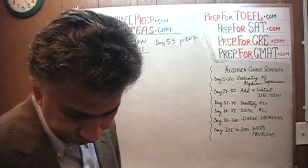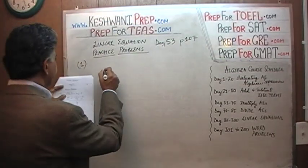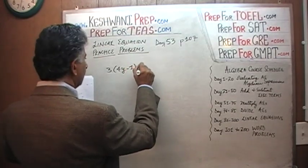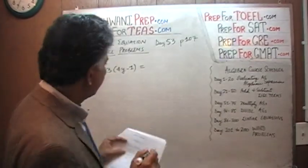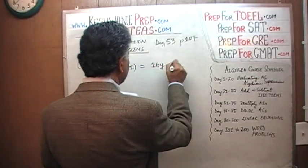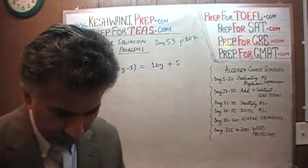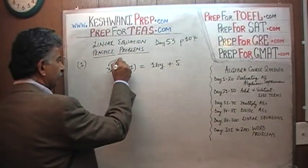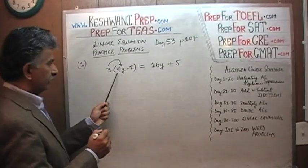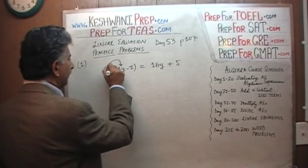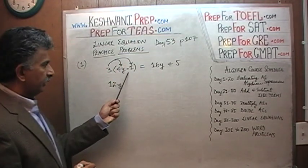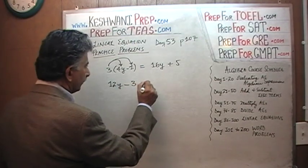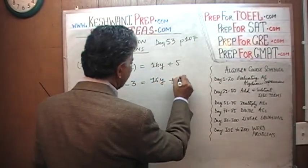The first problem says 3 times (4y minus 1) is equal to 16y plus 5. The very first thing we need to do is open this parenthesis — distribute this 3. 3 times 4 is 12, so we get 12y, and 3 times negative 1 gives us negative 3, so we have 12y minus 3 equals 16y plus 5.